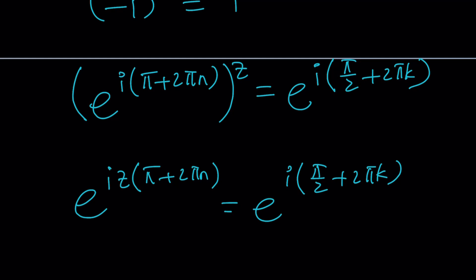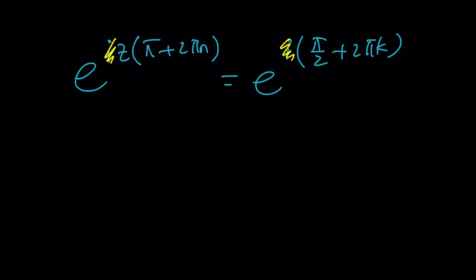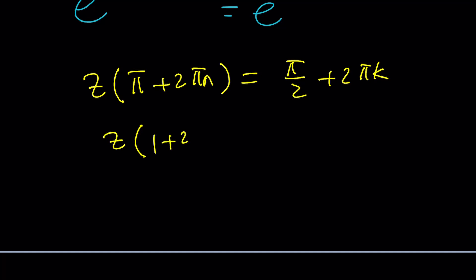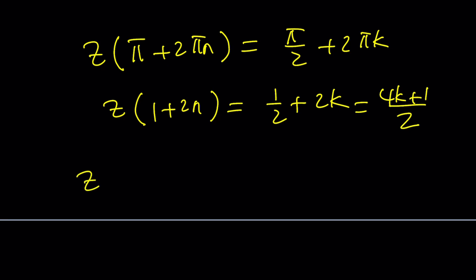k and n are integers again, and now we can cancel out the i because it's not 0. Now, natural log both sides, and you're going to get the following: z times pi plus 2 pi n equals pi over 2 plus 2 pi k. Now, we can go ahead and divide both sides by pi, which is nice because that's going to give us z times 1 plus 2 n, and on the right-hand side, we're going to get 1 half plus 2 k. And now we have an odd integer on the left-hand side. Let's go ahead and make a common denominator. This is 4 k plus 1 divided by 2, and then let's divide both sides by 1 plus 2 n. It's going to look like this at the end: z equals 4 k plus 1 over 4 n plus 2.